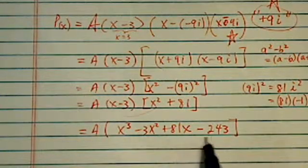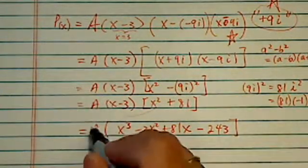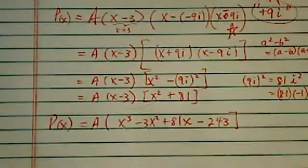So let's check: x cubed minus 3x squared plus 81x minus 243. Here is your polynomial.